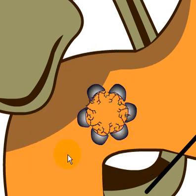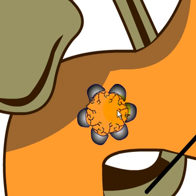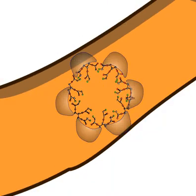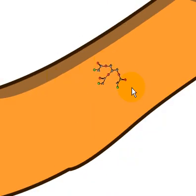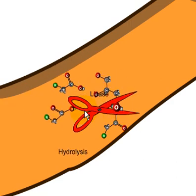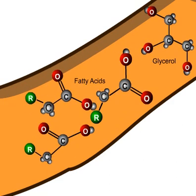This emulsified fat makes its journey down through the small intestine, and the lipase from the pancreas is released. It degrades the fat molecule into fatty acids and glycerols. The triglyceride is cut by lipase — represented here as scissors — and you get one glycerol molecule and three fatty acids.